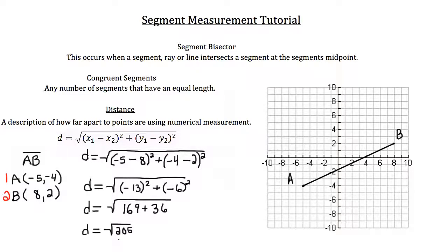The square root of 205, when entered into a calculator, is roughly 14.3. If you count over on the graph you'll see that's about accurate. That's how we use the distance formula to calculate the length of a segment on a coordinate graph.